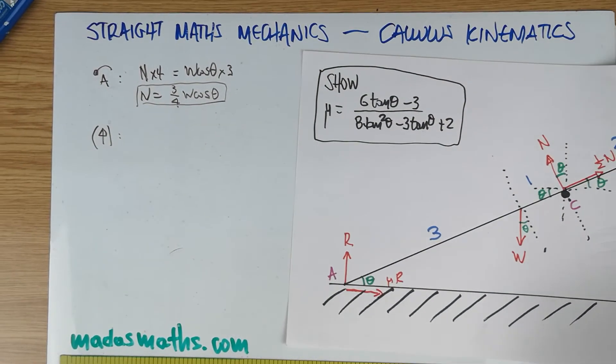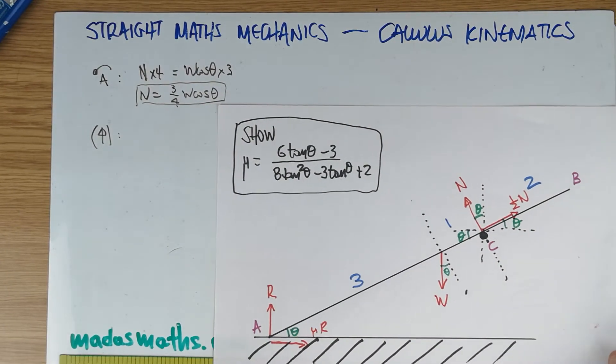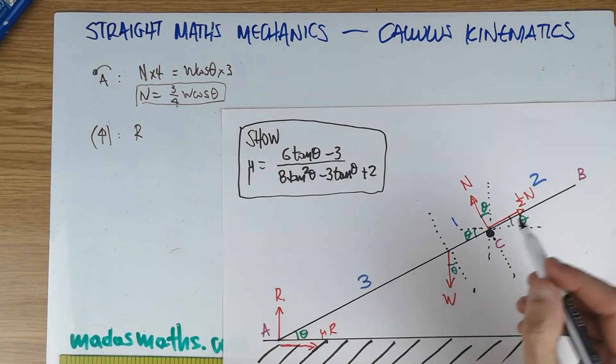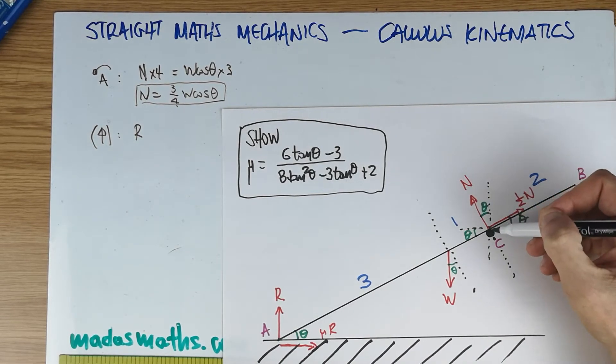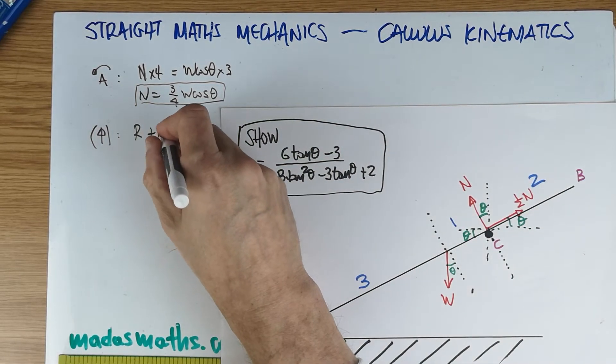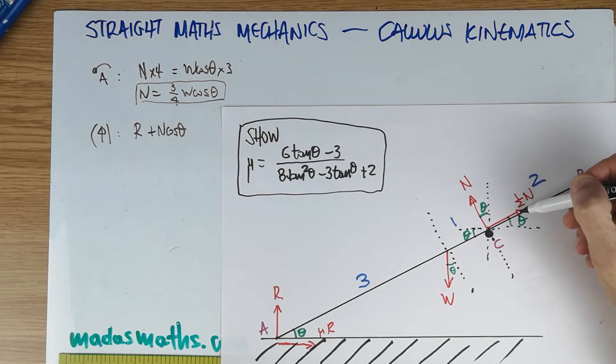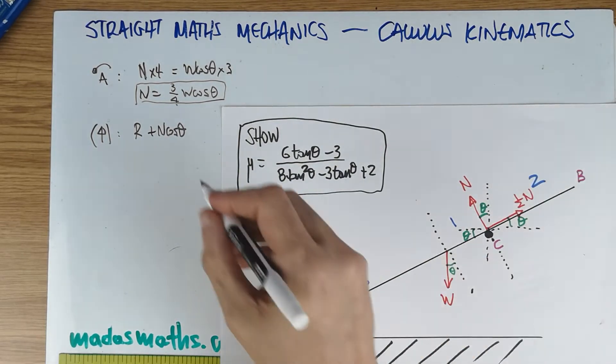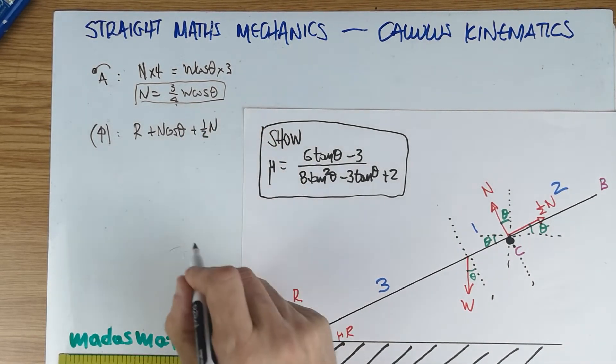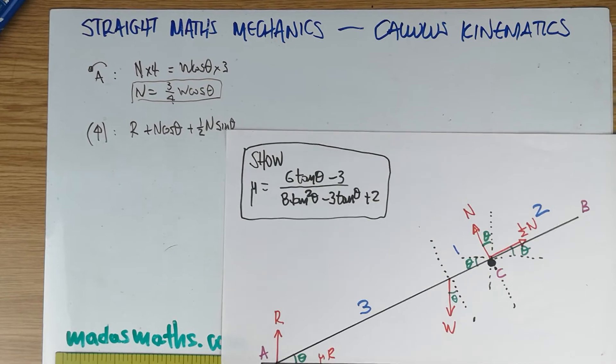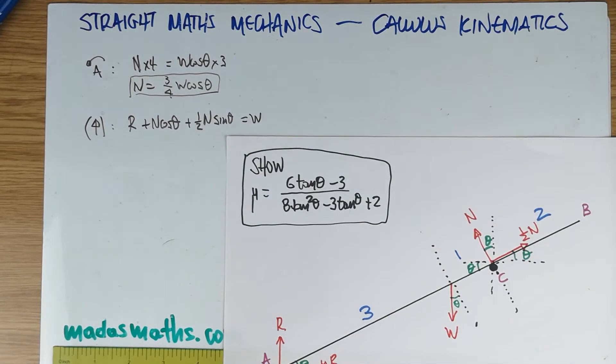If I resolve now vertically, let's see which forces are there, and I have forces up equal forces down. Up, I have the R, entirely upwards. From this line here, I have the component of N which falls into that, that's the cos, N cos θ, plus N cos θ. I also have a component here from the half N, this is sine, if I resolve it there, plus half N sin θ. That is equal to W. This is now the second equation.